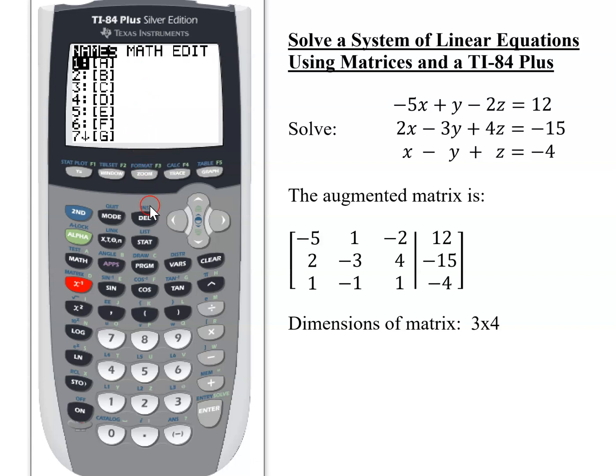All you have to do is overwrite them. So I want to call my matrix A, but I need to edit, so I've got to get over to here by hitting the right key twice. Now I'm in edit, and if I want to call it matrix A, notice it's already highlighted. If I want to edit matrix B, I'd have to scroll down to get to B. But I want matrix A, so I just hit enter. And it's told me right now, matrix A has dimensions 1 by 1. I need a 3 by 4. I need three rows. So I put 3, enter.